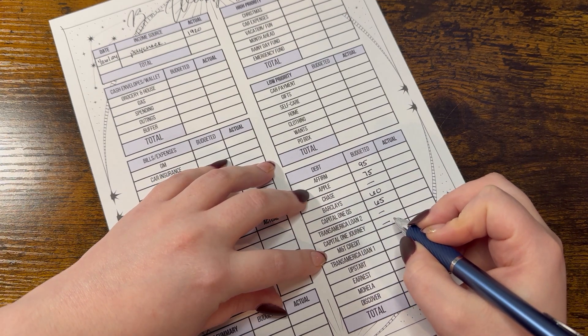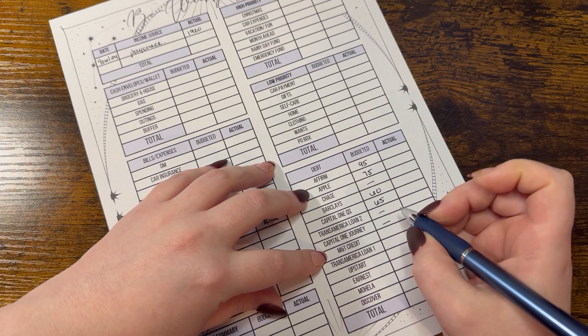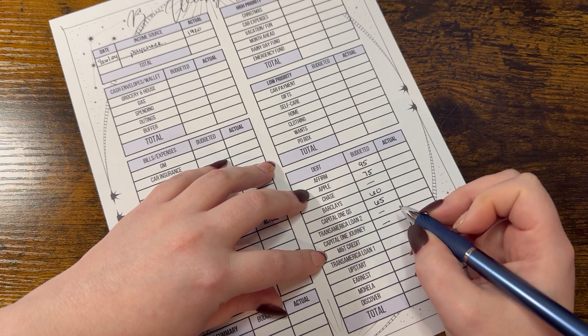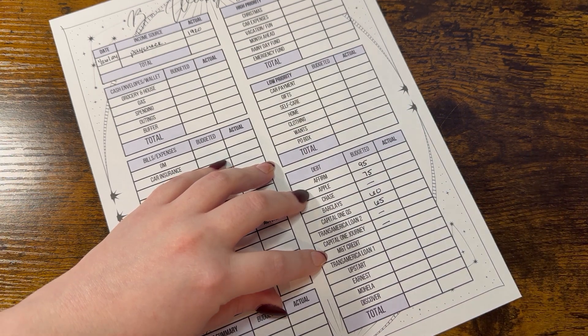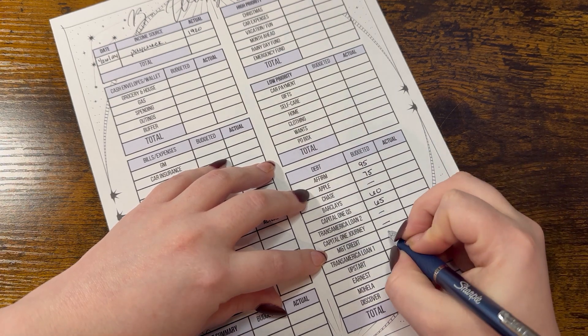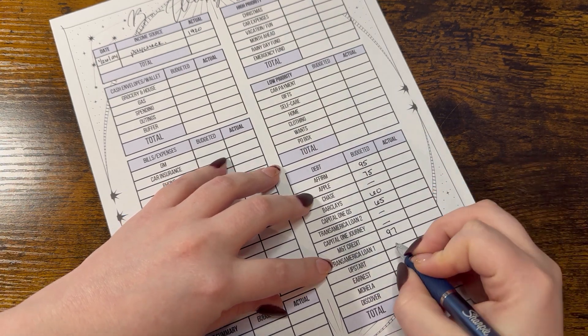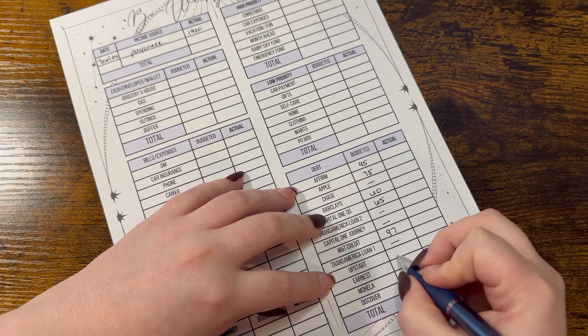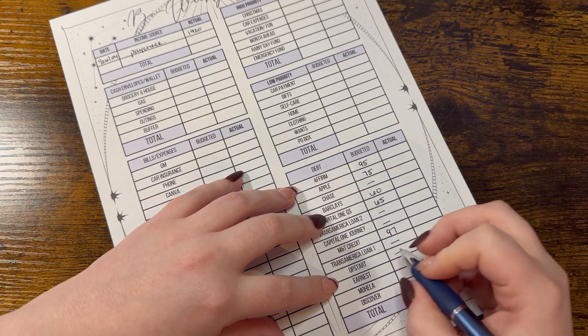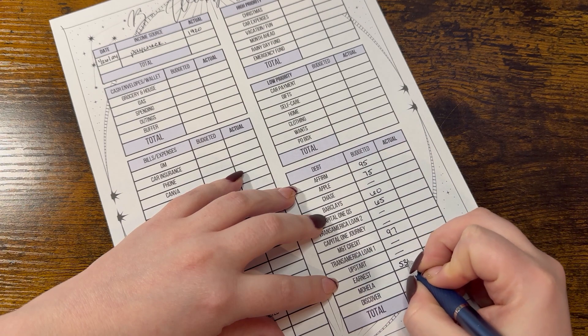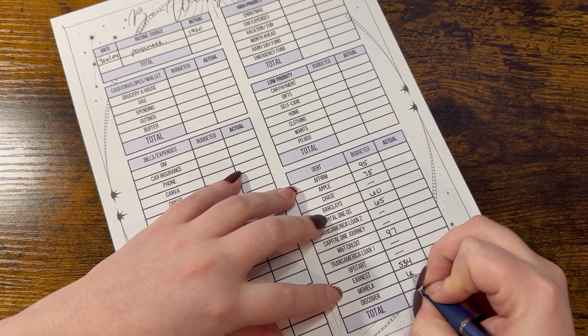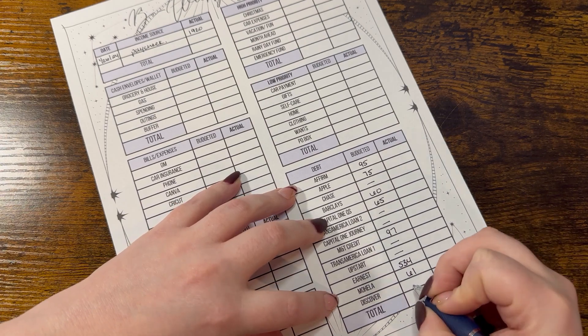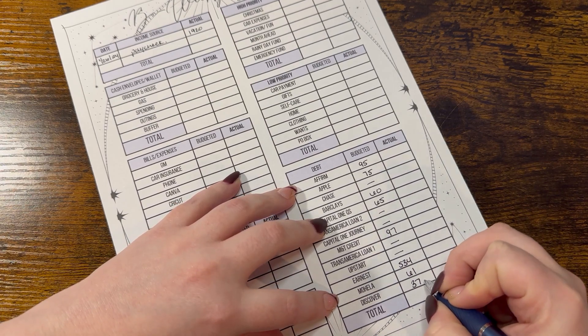M&T Credit will get $97. Transamerica gets nothing. Upstart gets nothing. Ernest gets $534. Mohala gets $61. And Discover gets $37.